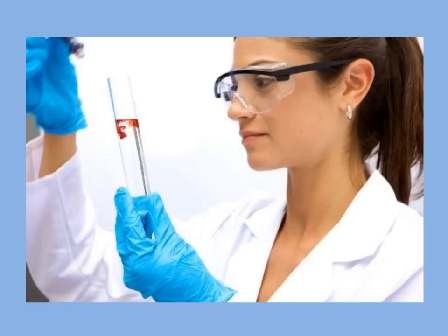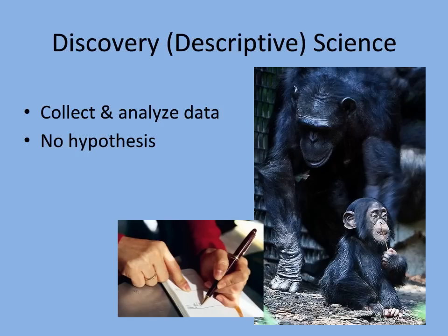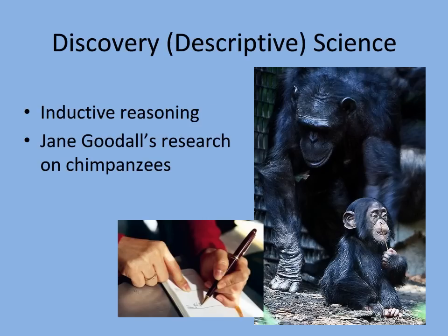In the end, we are trying to learn more about ourselves and the world around us. There are a couple of ways we can do this. We can study science by the discovery method, in which we observe and collect data and later analyze it. We have no initial concept, which is called a hypothesis, that we want to test for. This is a common way researchers study biology in the field. Also called descriptive science, discovery science allows scientists to use inductive reasoning to make conclusions based on observations.